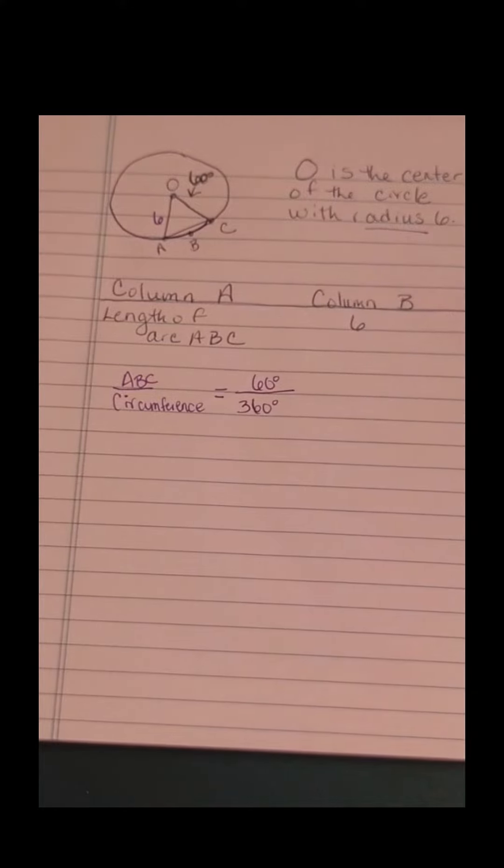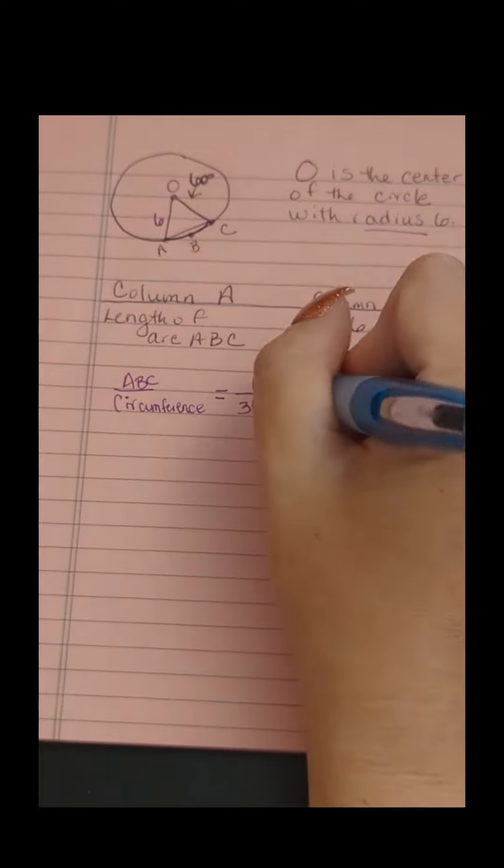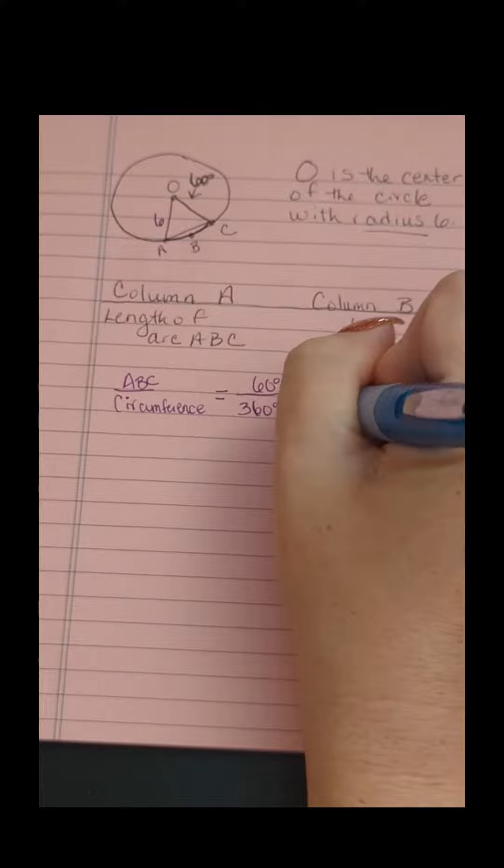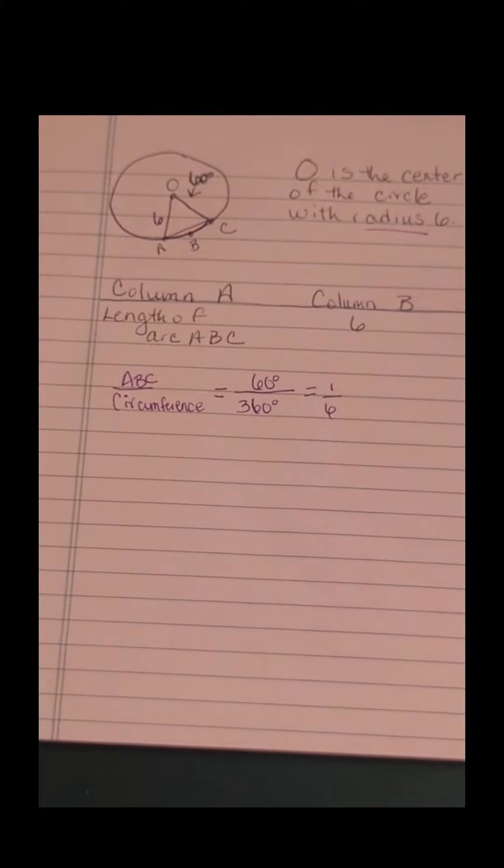Think of it this way: if I cut 60 degrees out of 360, that's 1/6. So this is like cutting a pizza into 6 slices and trying to find the length of the crust of one slice.